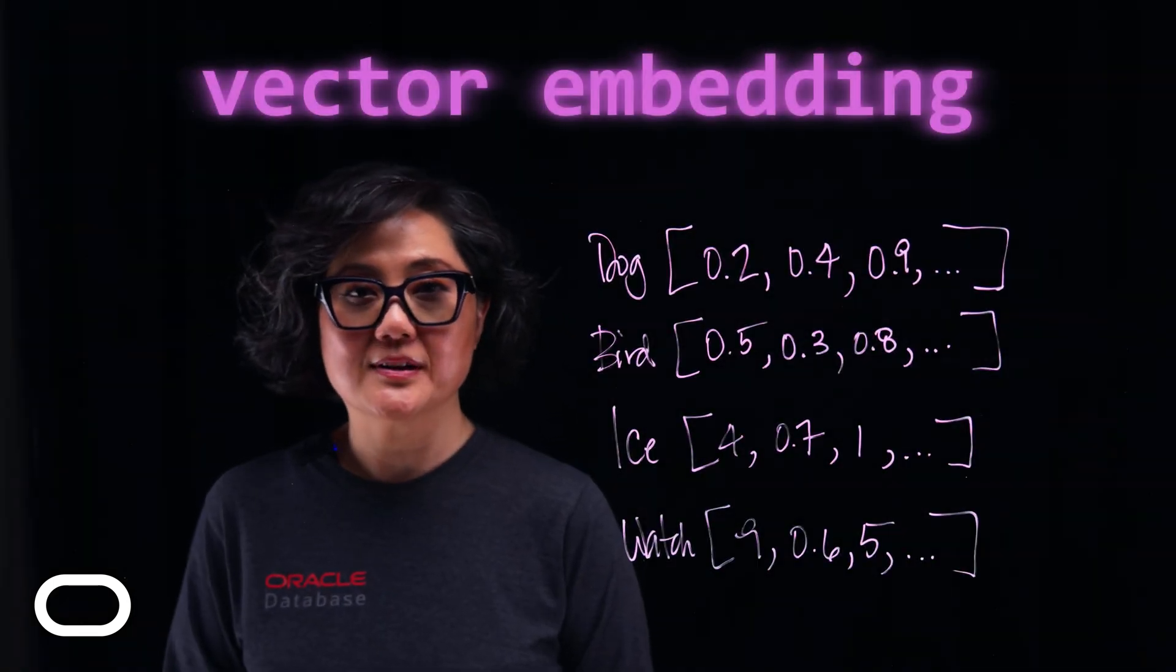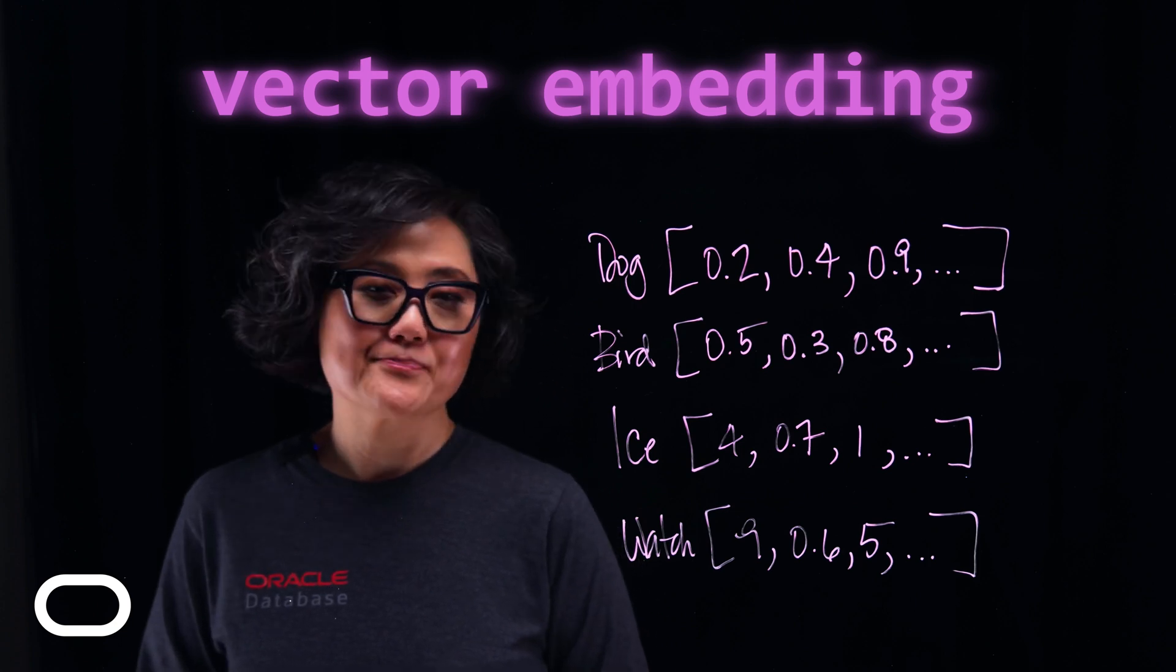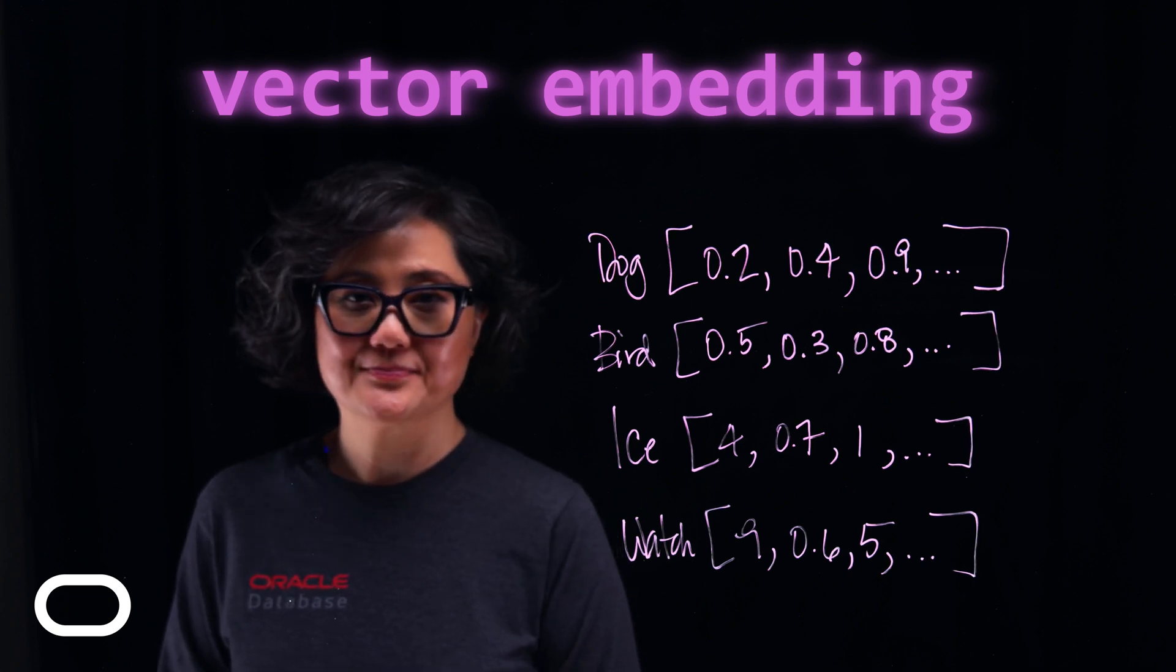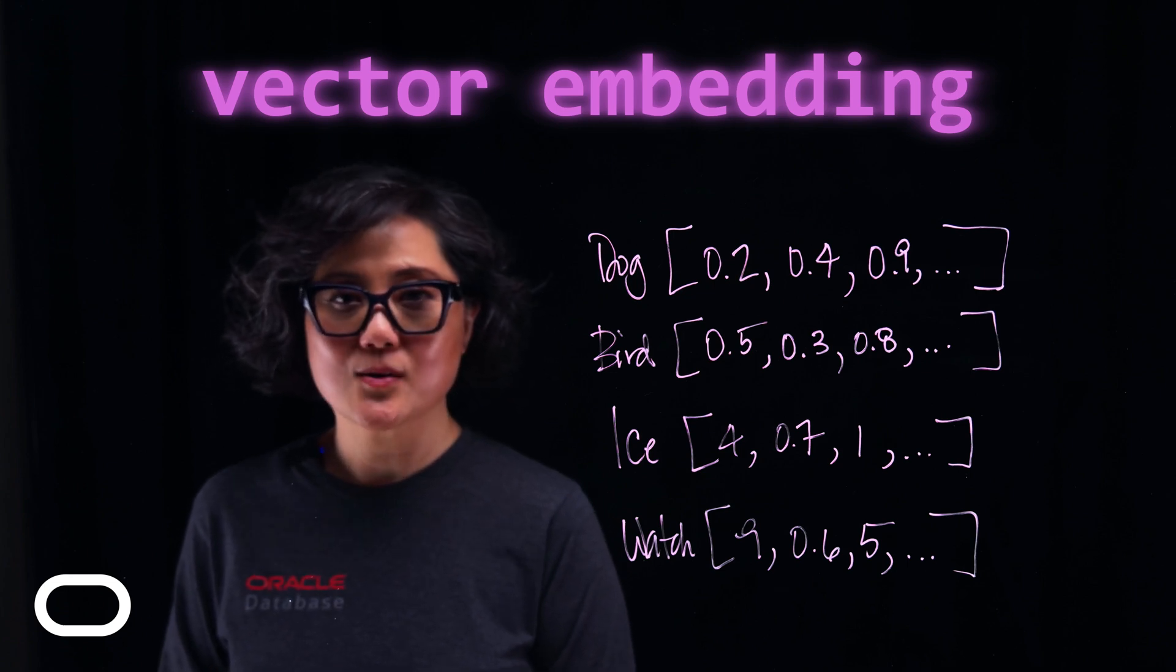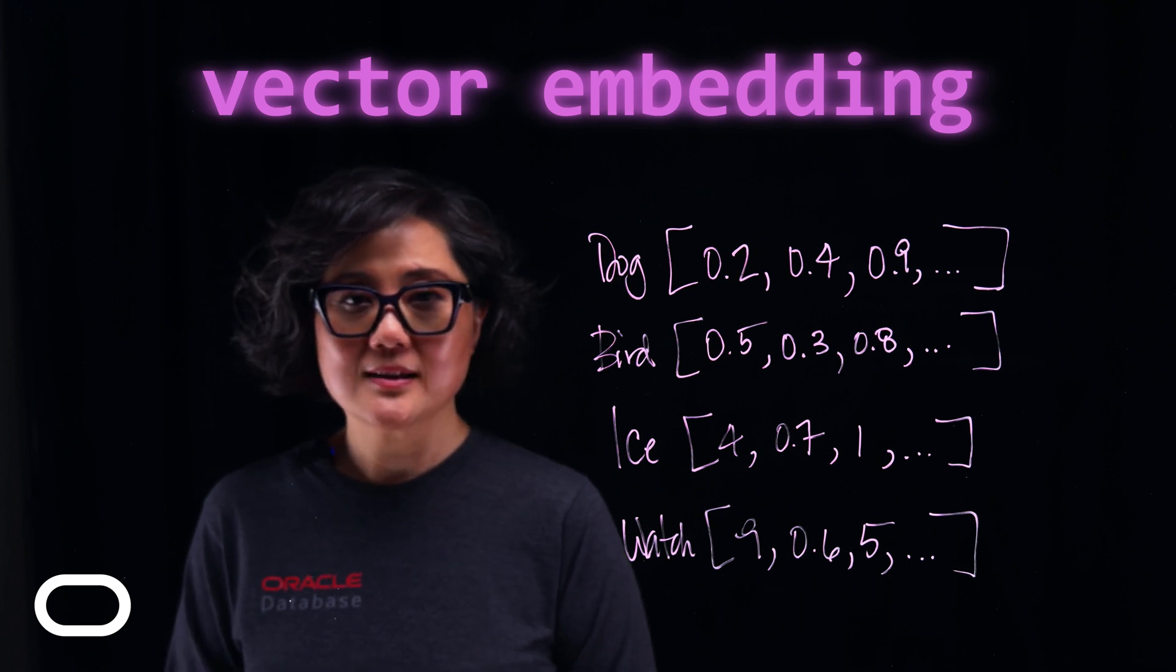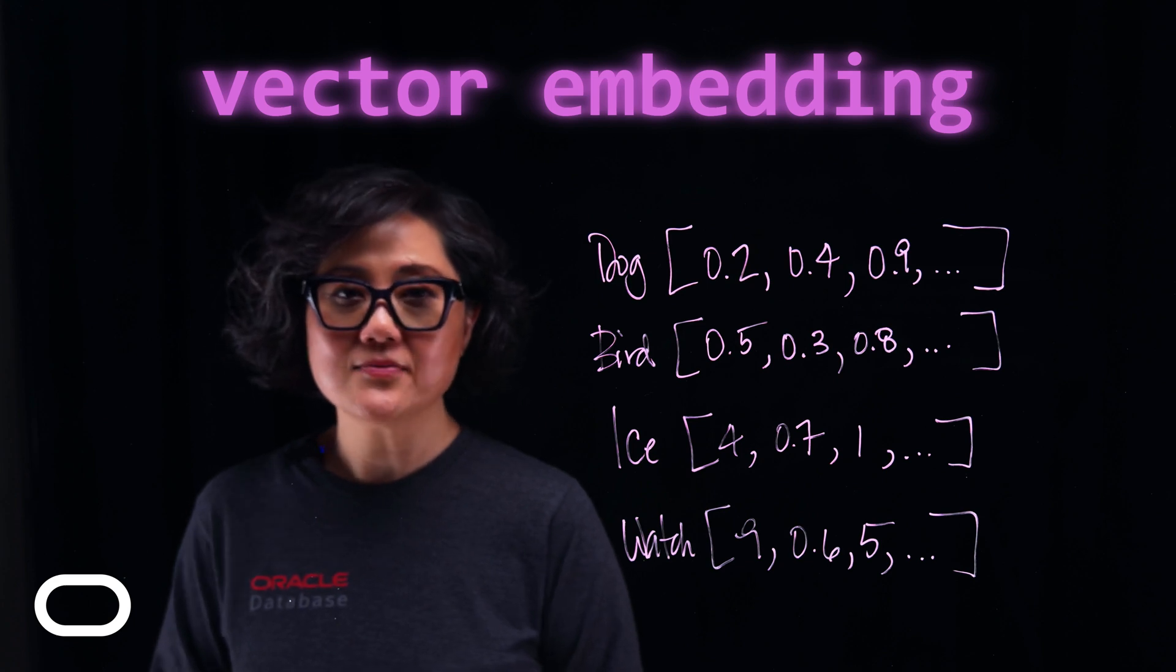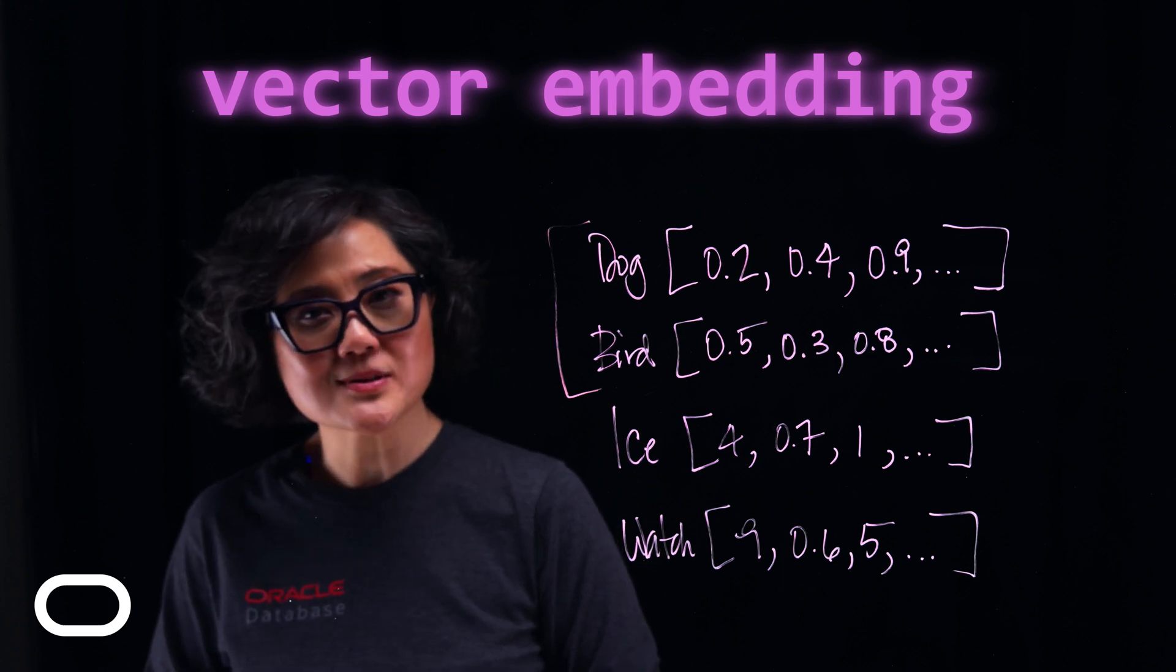Let's take a look at an example of some text and their features in a vector embedding. And for illustration purposes, let's use dog, bird, ice, and watch as the items or objects to search in a vector database. Embeddings are generated such that two objects with similar semantics will have vectors that are close to each other. That is, they have a small distance between them in the vector space. So when you do a search query for animals, you can see from the elements of the vectors that the closest matches are dog and bird.